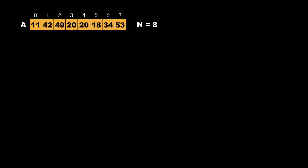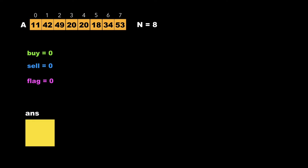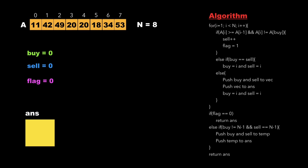Let's consider an example array of size 8 with elements 11, 40, 49, 20, 20, 18, 34, and 53. Let's declare a few variables namely buy, sell, and flag and initialize all of them to 0. Let's also create a vector namely answer which is the final answer.